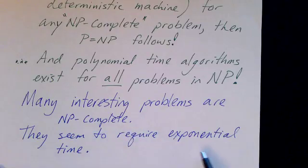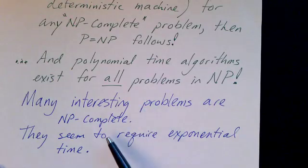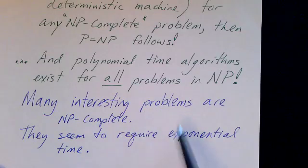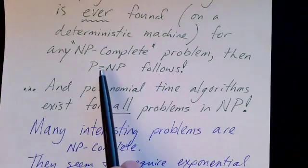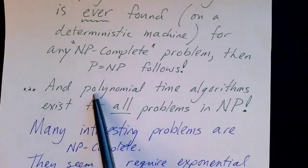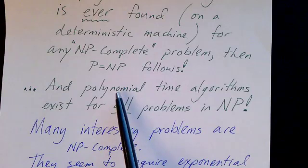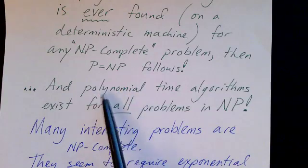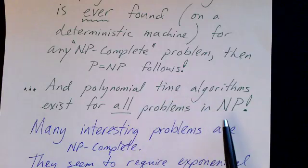It means that they seem to require exponential time to solve on a deterministic machine. And if, for any of those problems, you ever found a polynomial time algorithm on a deterministic machine, it would solve the NP problem. It would prove that P equals NP. And therefore, that not only had you found a polynomial time solution for the problem you're interested in, but you've proven that a polynomial time algorithm exists for all the problems in NP.